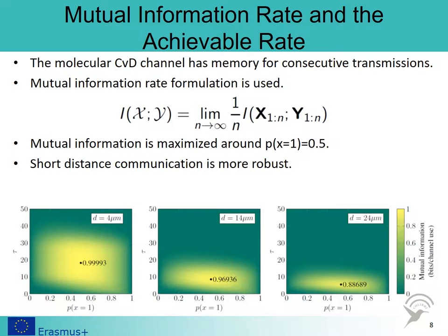We observe that the mutual information is maximized when bits 0 and 1 are transmitted with equal probability. For short distances, the communication is more robust, as indicated by the high intensity areas in the graphs.